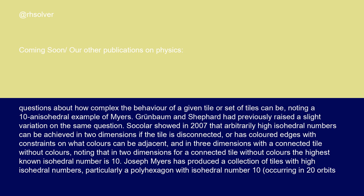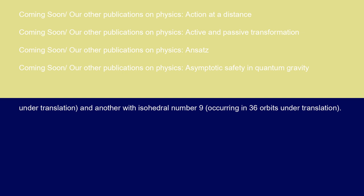Joseph Myers has produced a collection of tiles with high isohedral numbers, particularly a polyhexagon with isohedral number 10 occurring in 20 orbits under translation, and another with isohedral number 9 occurring in 36 orbits under translation.